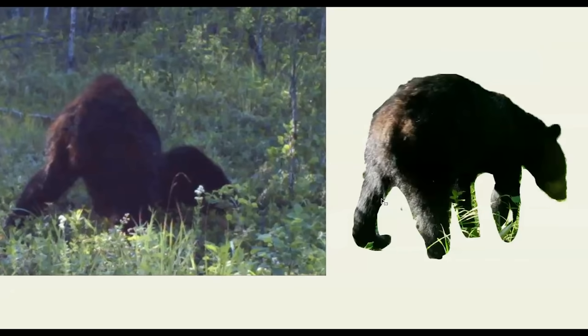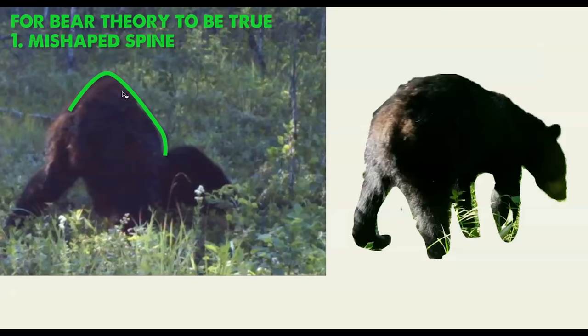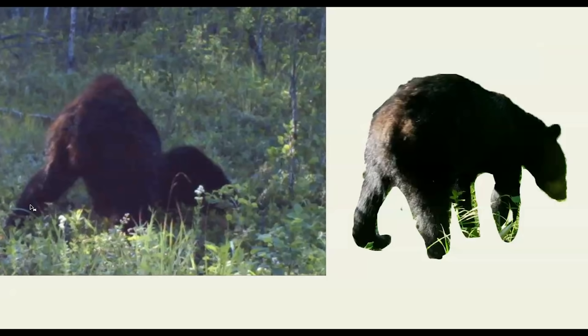The second problem with the bear theory is, look at a bear's actual hind leg — it's relatively small and shapeless. Compare that to this shape over here. We see massive amounts of muscle, a completely different shape. So for you to believe this is a bear, you have to believe two things: one, that it's a bear with a back deformity, and two, that its lower leg is massively built up and muscular. You're going to have to provide some photo or video of that. Otherwise, your bear does not exist.